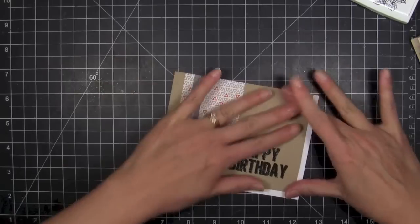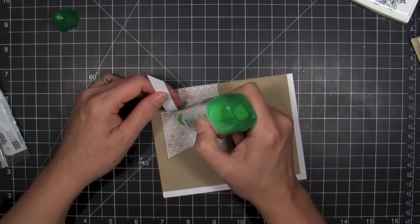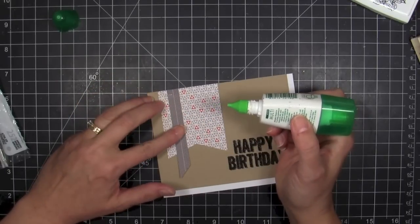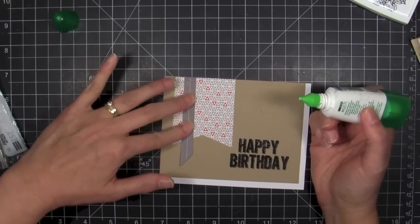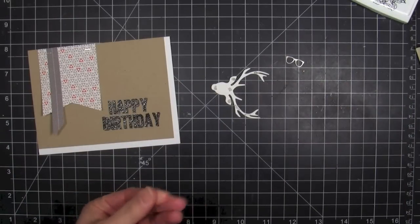And then I'm going to go ahead and mount that and let the corners, the bottom and the right-hand side there of the base card, which is just Neenah Solar White, kind of show through there. Just a different kind of layout. And then a little bit of mono-multi glue there underneath that banner to keep it anchored. And I decided I wanted to pop up my stag.